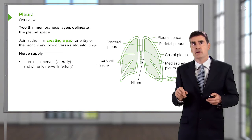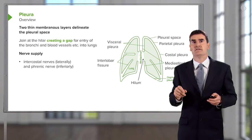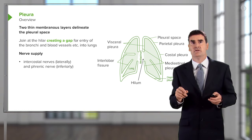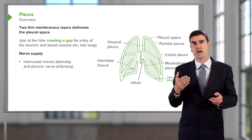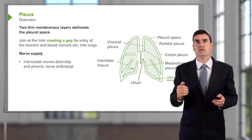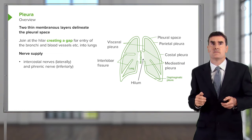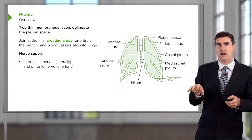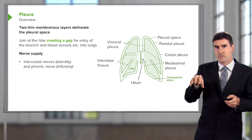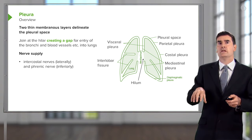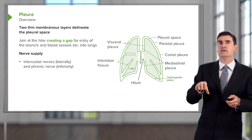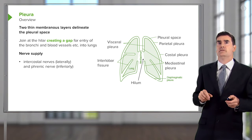The nerve supply to the pleura is from the intercostal nerves that lie underneath each rib. The nerve supply to the pleura which overlies the diaphragm is from the phrenic nerve.